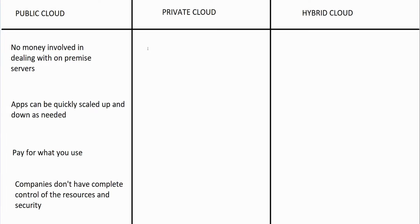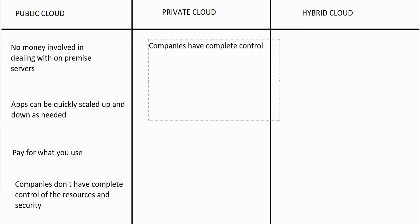Now let's talk about private clouds. With a private cloud, you are essentially paying for all the hardware and all the management of it. One of the biggest benefits is that companies have complete control of the resources and security — whereas with a public cloud that's seen as a big disadvantage, with a private cloud the company itself has complete control.